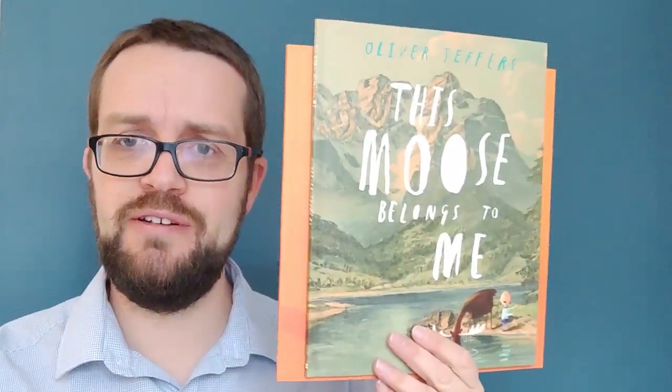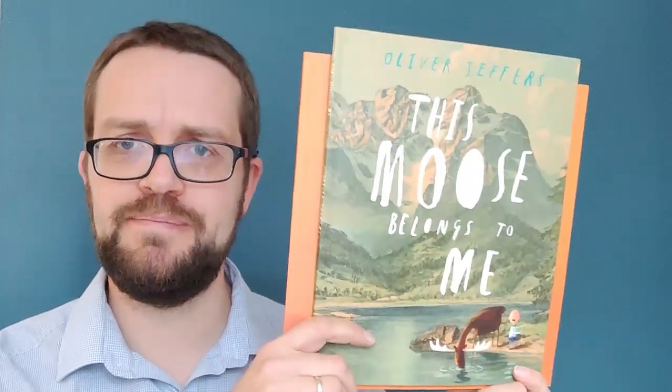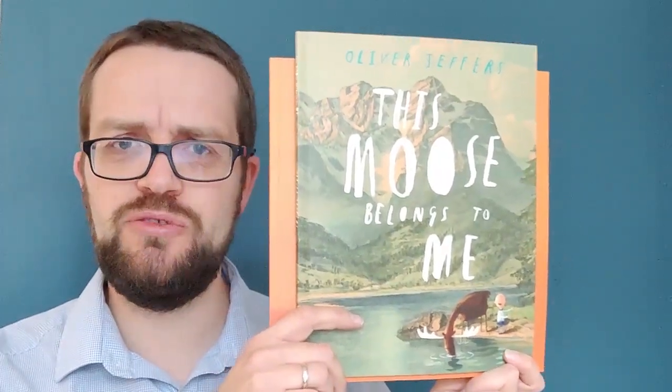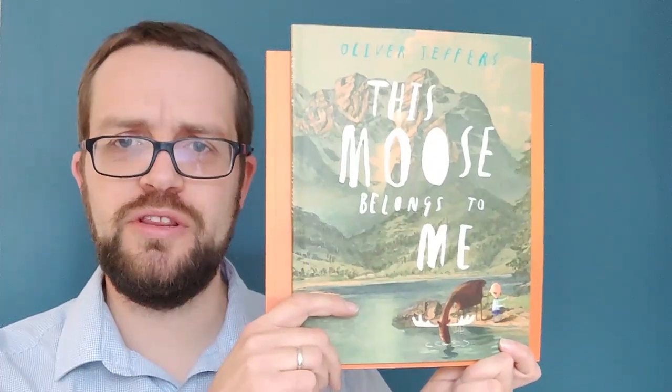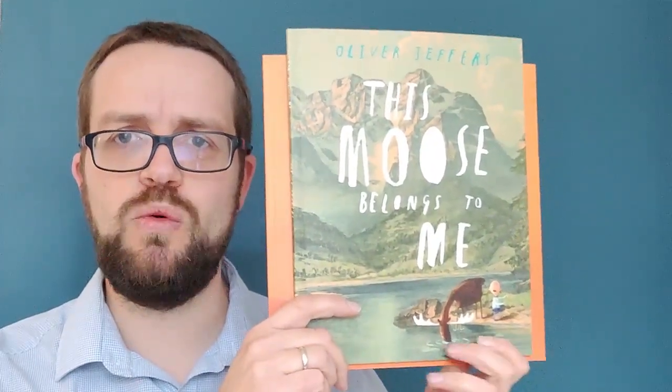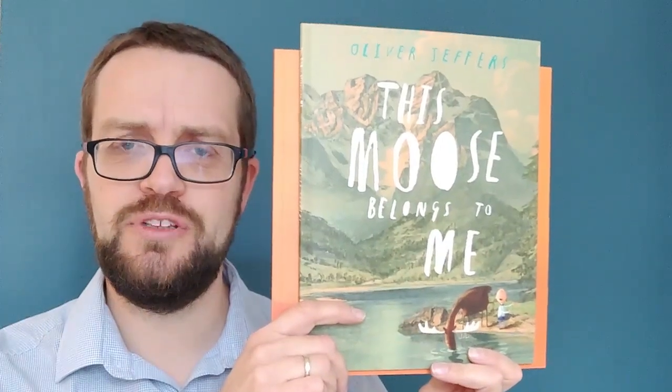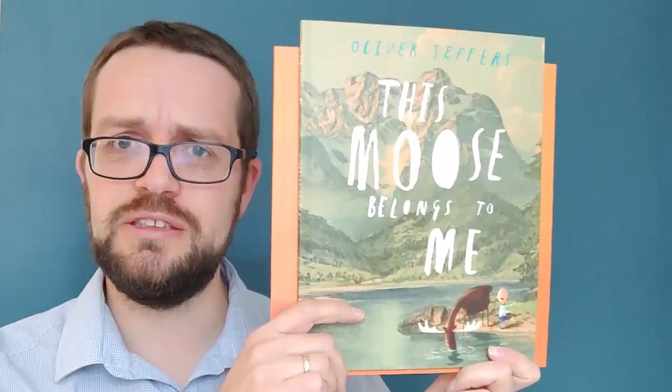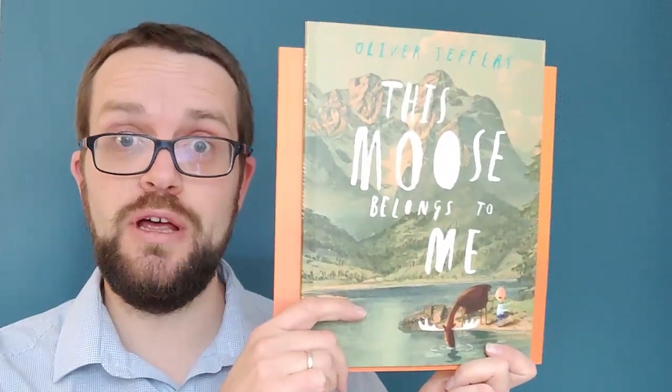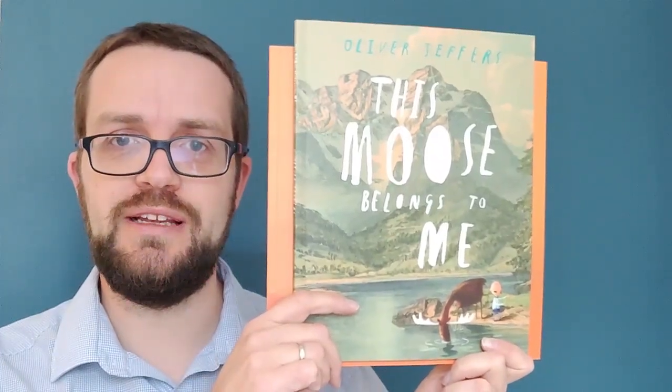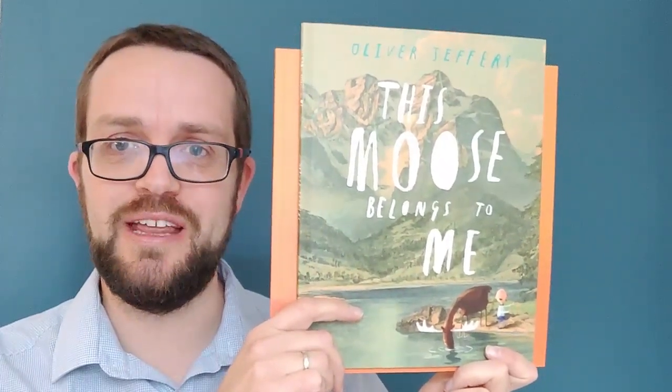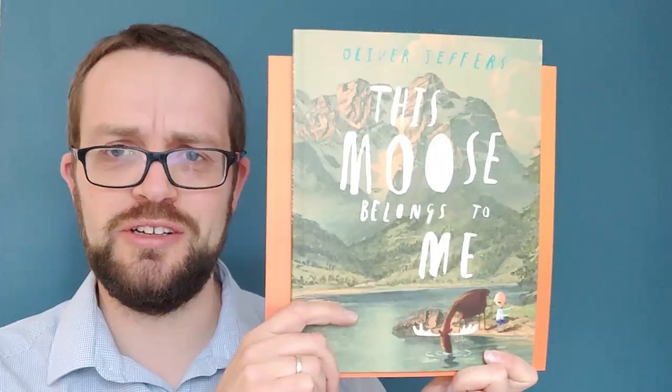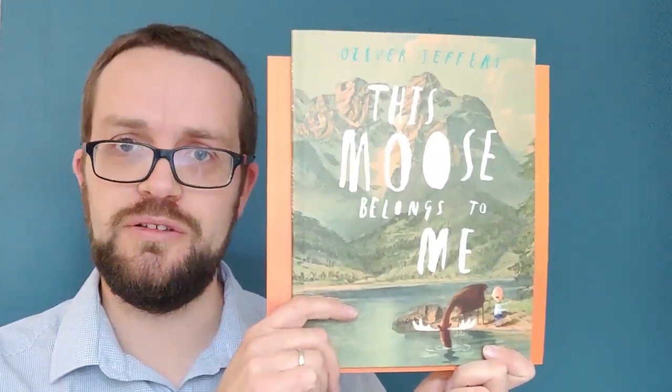And we're going to think very carefully about this boy today. His name is Wilfred, and he's the boy who owns the moose. And as we read this story together, I want you to think very carefully about how Wilfred is feeling. Do you think you can do that for me? So listen to the words, look at the pictures, and see if you can work out or infer how Wilfred is feeling. Let's read our story together then. I won't read it all today because I'll keep some of the surprising bits till tomorrow. But we're going to start off reading This Moose Belongs to Me.